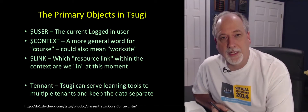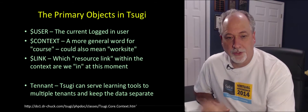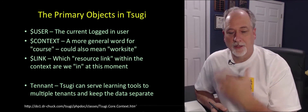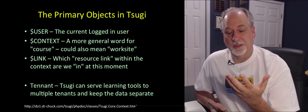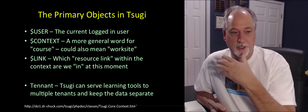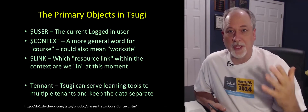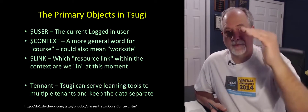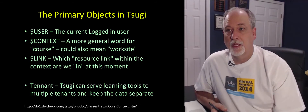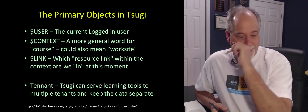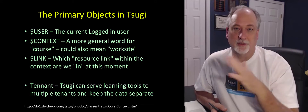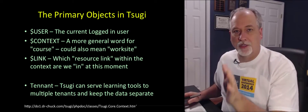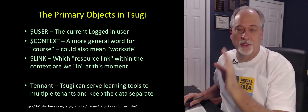The basic idea of Tsugi runtime is that ultimately there are three real primary objects: the current user, the current course, and the current resource link from the learning management system. Within that, it's a multi-tenant architecture. So we have four basic concepts: tenant, course, user, and link.